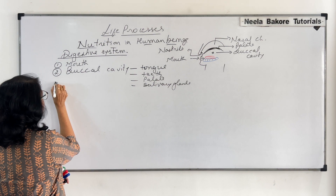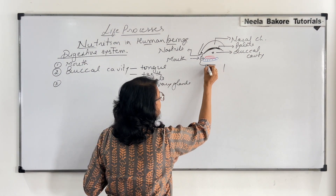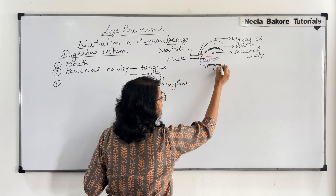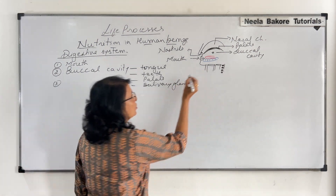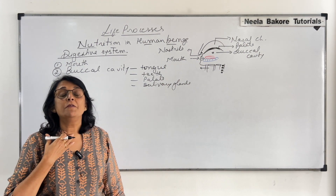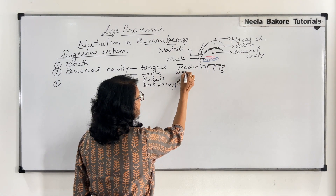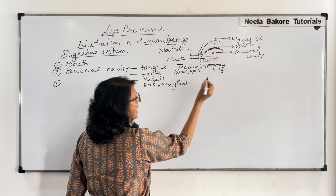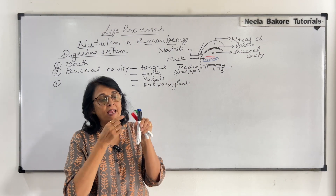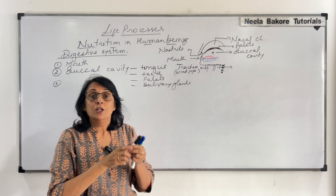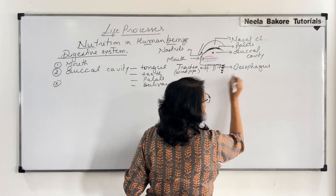From the buccal cavity, food goes into a pipe. In the neck region, there are two pipes. The pipe in front, which we can feel in our neck, is the trachea — commonly called the windpipe. The pipe behind it is our esophagus, which we call the food pipe. When we swallow food, it goes into the esophagus; when we breathe in, the air goes into the trachea.